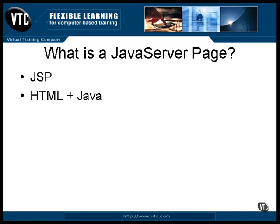On top of that, there are some special method calls you can make, like get parameter, which returns the parameter information that was sent from the web browser and included as part of the URL. What actually happens is that the entire JSP is translated into a single class file — a servlet — and it's the servlet that runs and produces the final web page. I'll tell you about servlets in the next lesson.